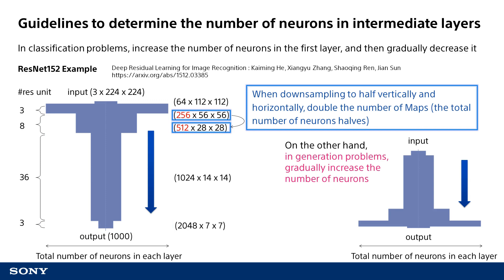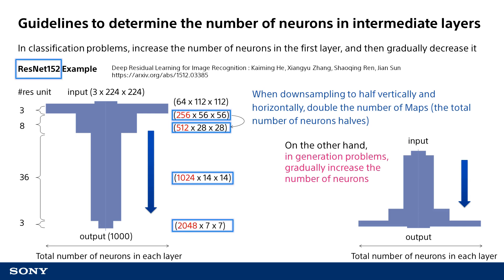The key point to keep in mind is that when you have downsampled to half of the size vertically and horizontally — using max pooling or a convolution stride — you need to double the number of images, in other words the number of maps in convolution. The reason is that downsampling to half resolution reduces the number of neurons to one-fourth. By doubling the number of images at the same time, you can reduce the total number of neurons by only half each time. You can see that in the actual ResNet-152, the number of images doubles when image resolution is cut in half.